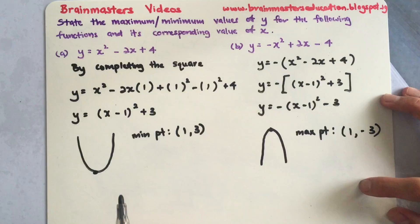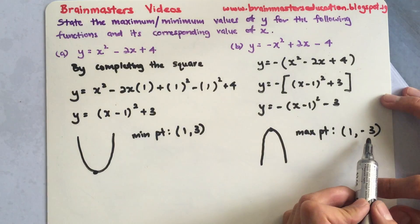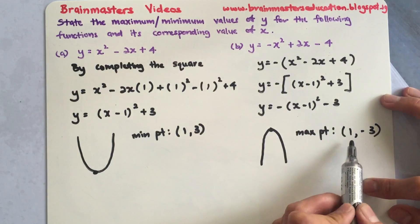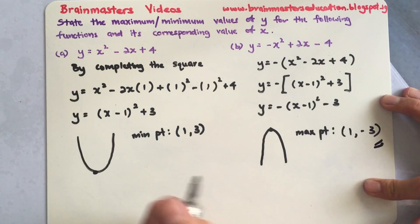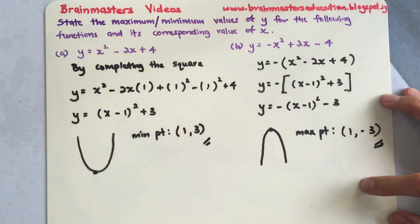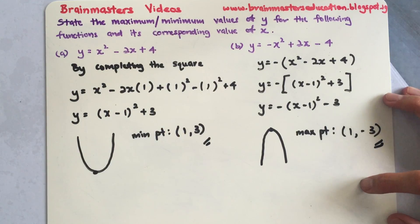My value for y will be negative 3, and my corresponding value for x will be 1. This will be my answer to find the maximum and minimum value for the following function.